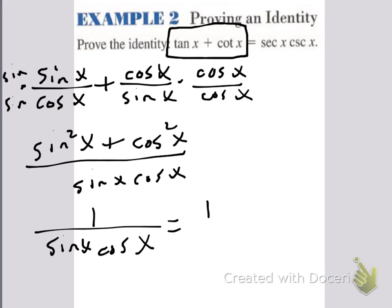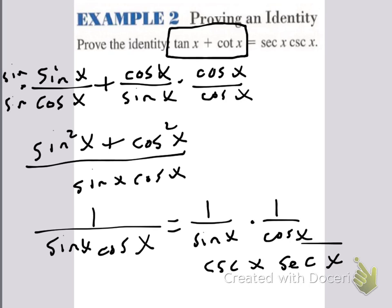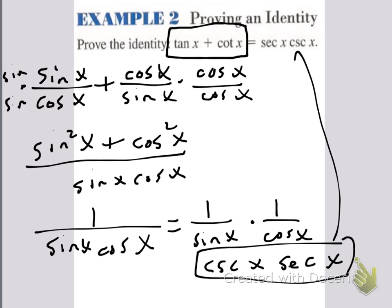If I split those up, that's 1 over sine times 1 over cosine. But what's 1 over sine? One over sine is cosecant, and 1 over cosine is secant. Now I know they're switched around, but multiplication doesn't matter either way. So what we did was break tangent and cotangent down to sines and cosines, used common denominators, used a Pythagorean identity, and we were able to get secant x cosecant x.